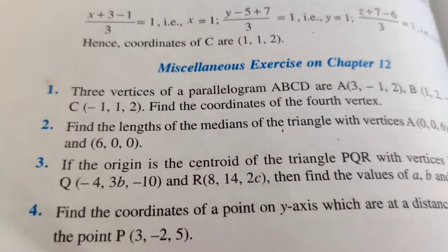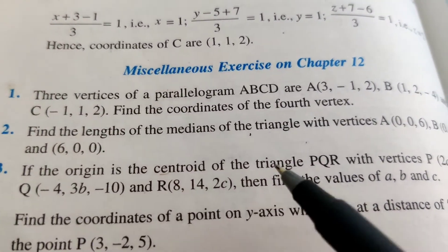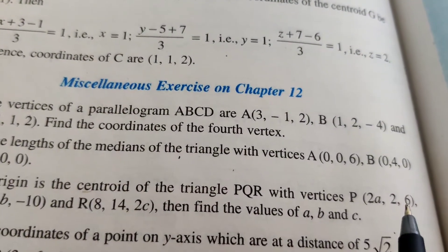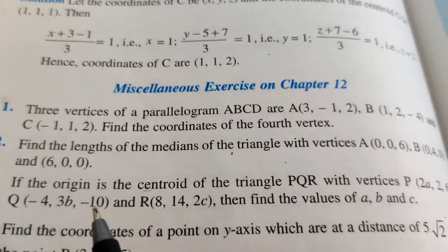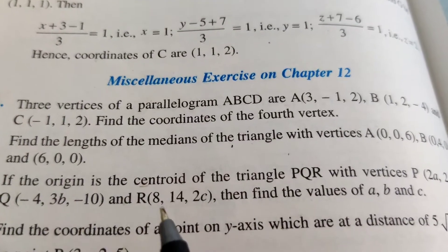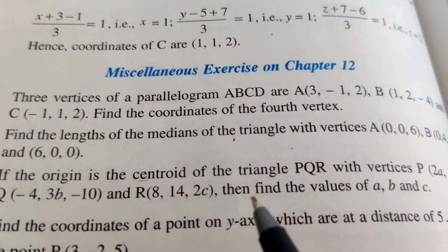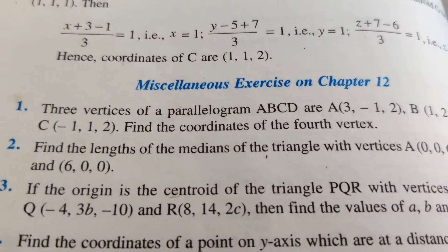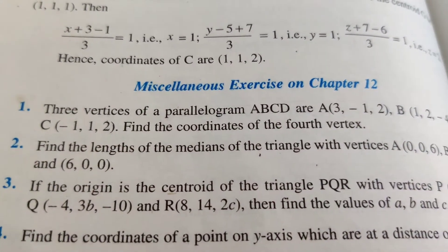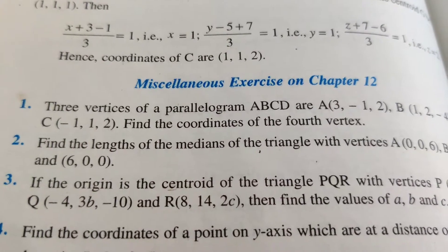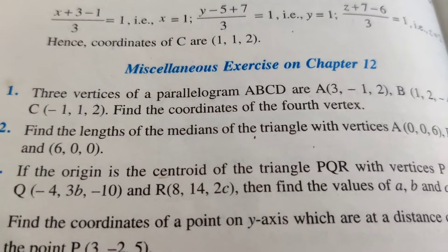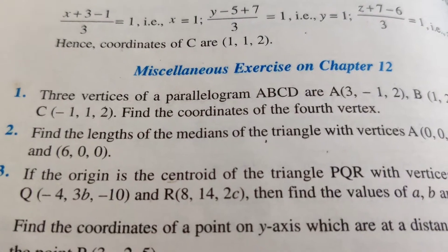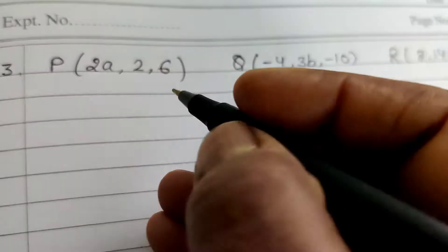Question number 3: If the origin is the centroid of triangle PQR with vertices P(2a, 2, 6), Q(-4, 3b, -10), and R(8, 14, 2c), find the values of a, b, and c. We know that the coordinates of the centroid are (x1+x2+x3)/3, (y1+y2+y3)/3, (z1+z2+z3)/3.